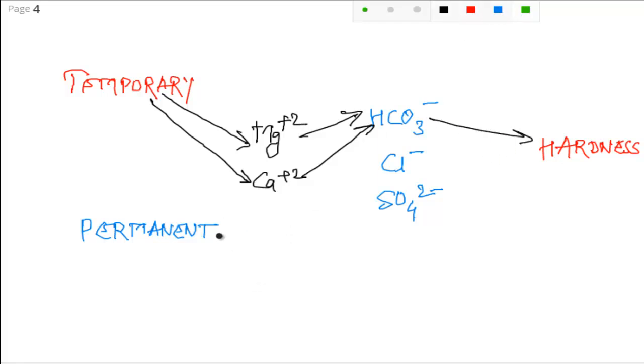And what about permanent hardness? So permanent hardness is due to again these two ions—magnesium and calcium. The anionic part is chloride and sulphate. And these two constitute permanent hardness.